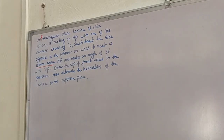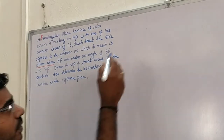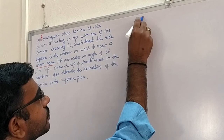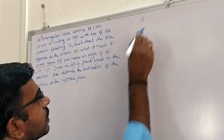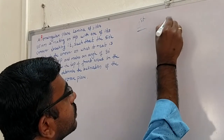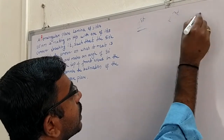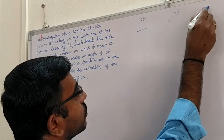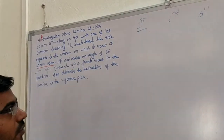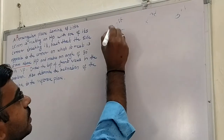First, we should know what details are given in each position. I will write it here: first position, second position, and third position. What details are given in the first, second, and third positions? We should know that.